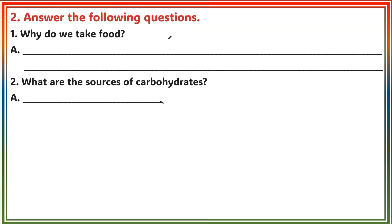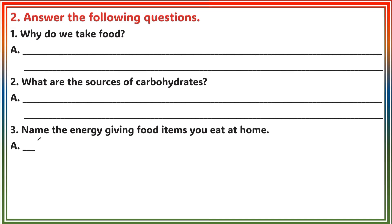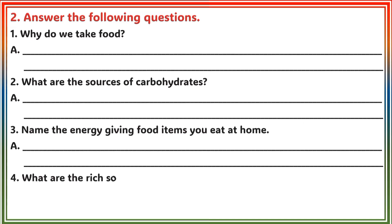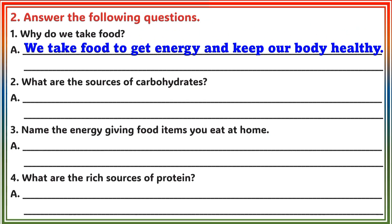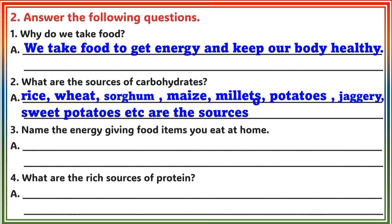Section 2: Answer the following questions. Question 1: Why do we take food? Answer: We take food to get energy and keep our body healthy. Question 2: What are the sources of carbohydrates? Answer: Rice, wheat, sorghum, madge, millets, potatoes, jaggery, sweet potatoes, etc. are the sources of carbohydrates.